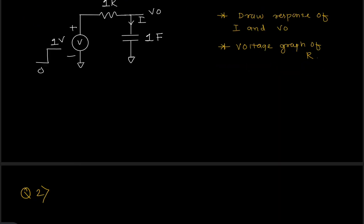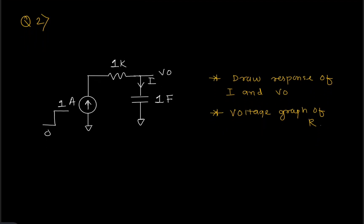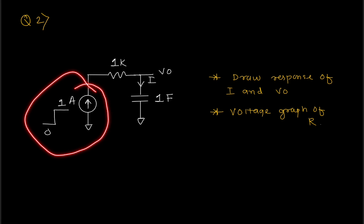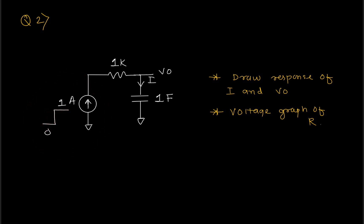After that they told me to replace the voltage source with a 1-ampere current impulse source. They told me to draw the response of current and V0, same as the previous question — the voltage of the resistor as well as the voltage of the capacitor.